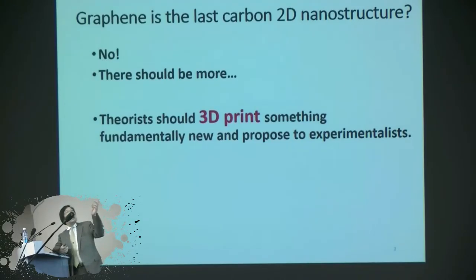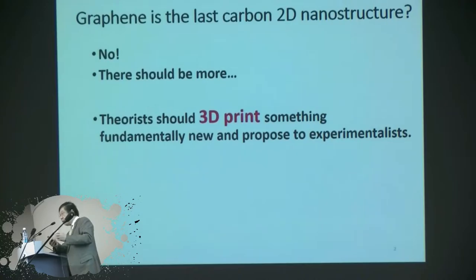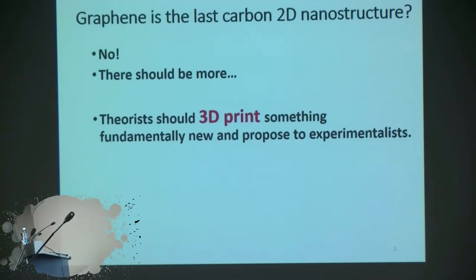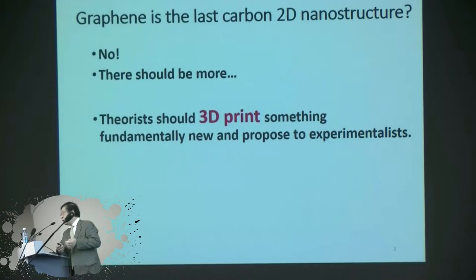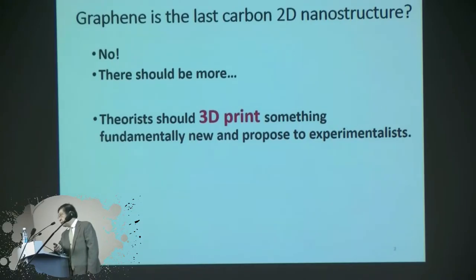So we studied and found something. And me, as a theorist, cannot make any synthesis. So I have a 3D print of this structure. You can see it's very difficult to understand what pentagraphene is just from a diagram, but by this way you can see. It's fundamentally new — not only the shape is different, but the properties also, as I will show you, are very interesting compared to the normal already-found hexagonal graphene.